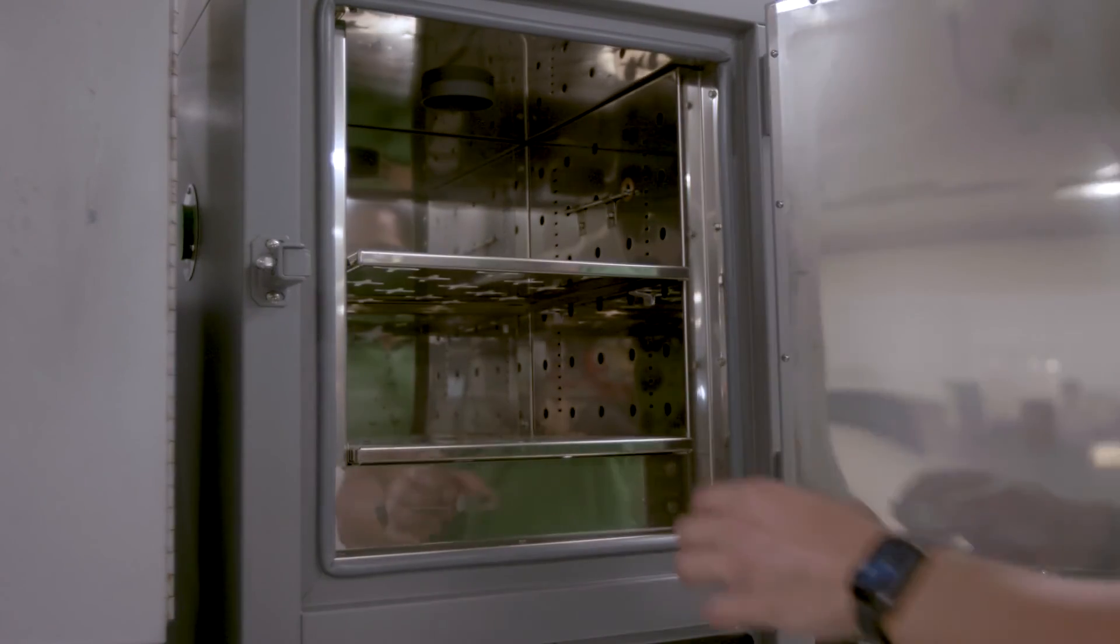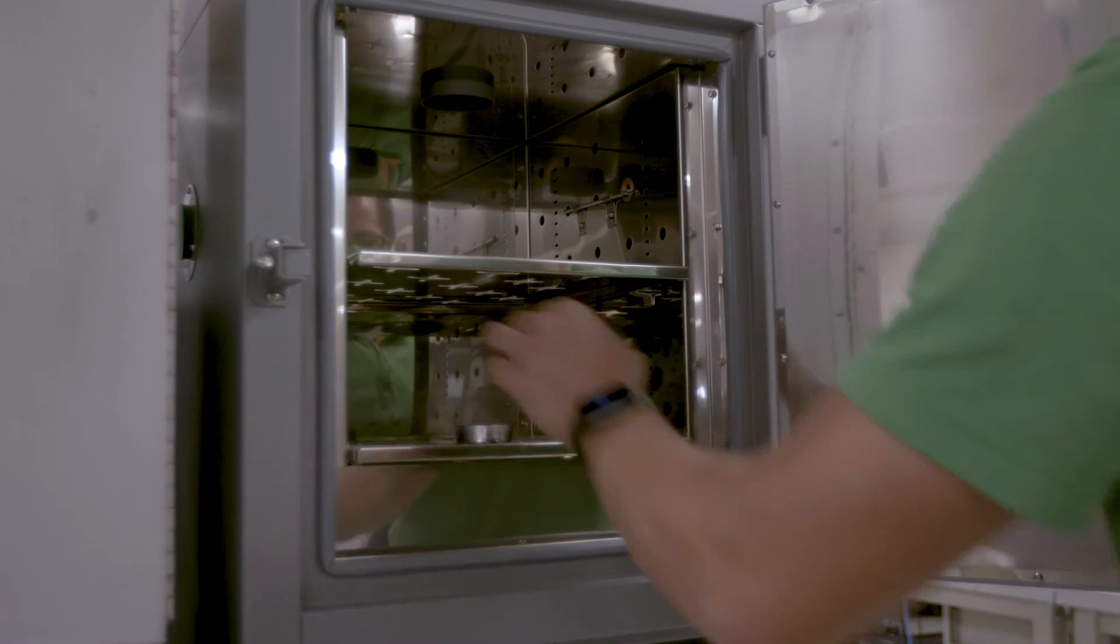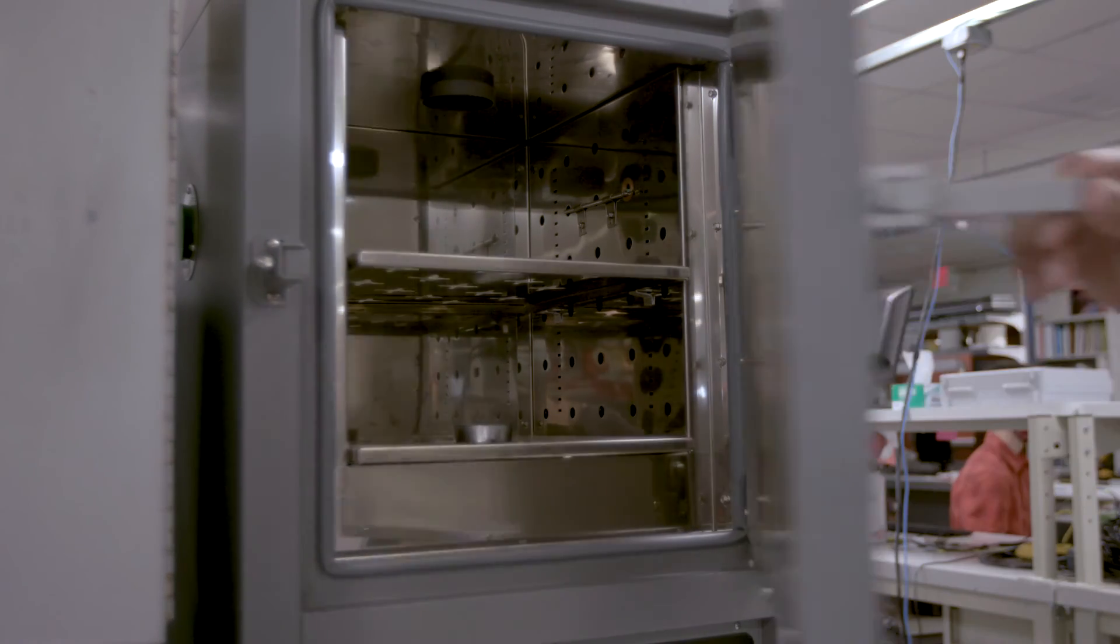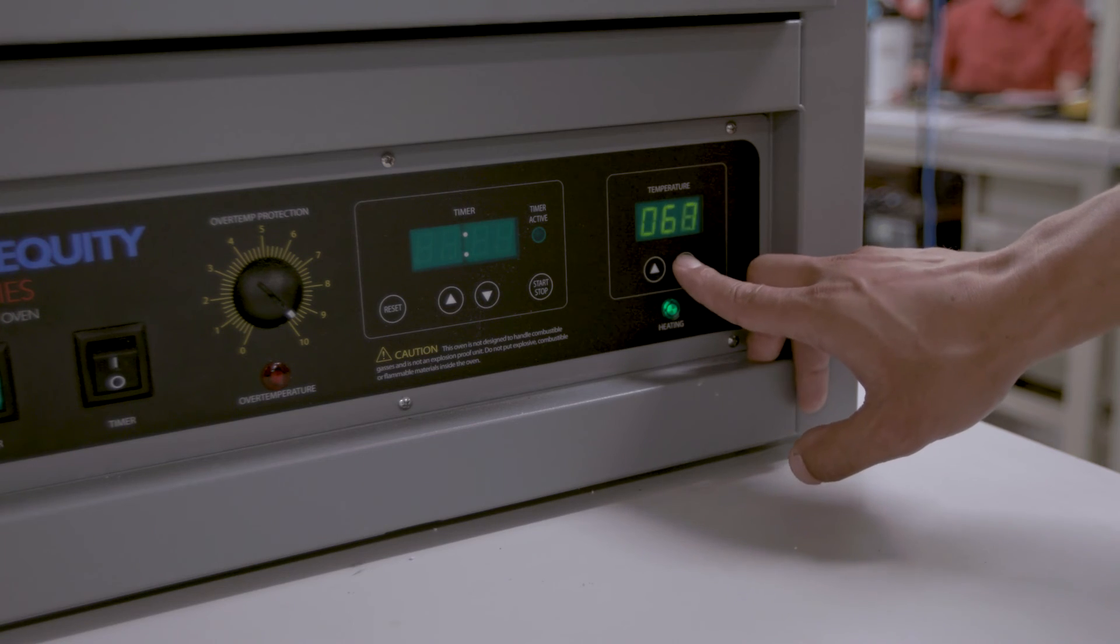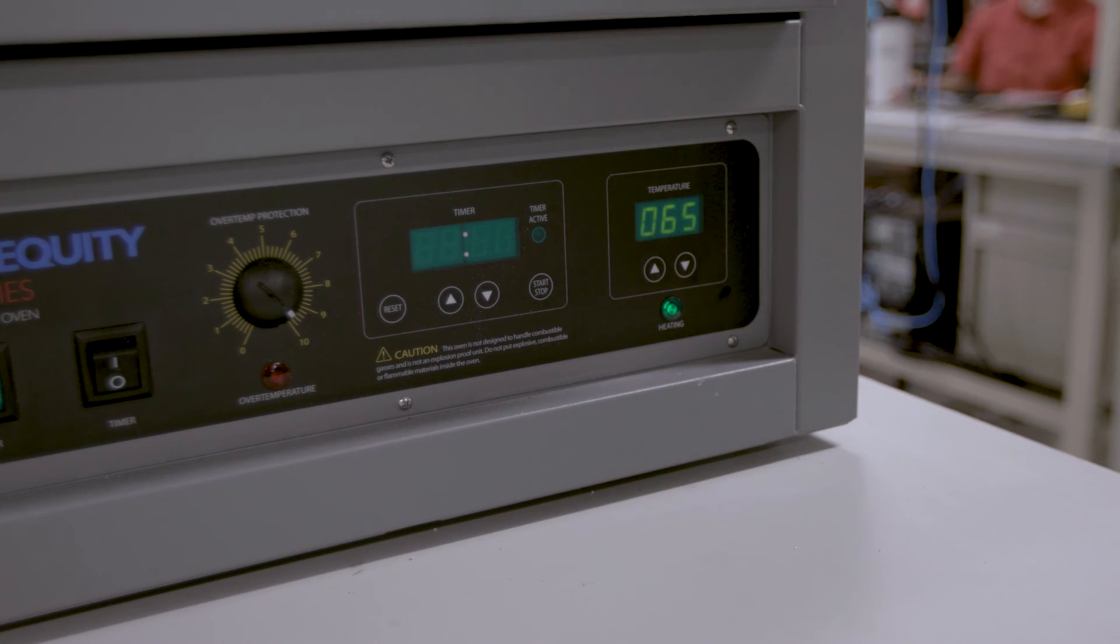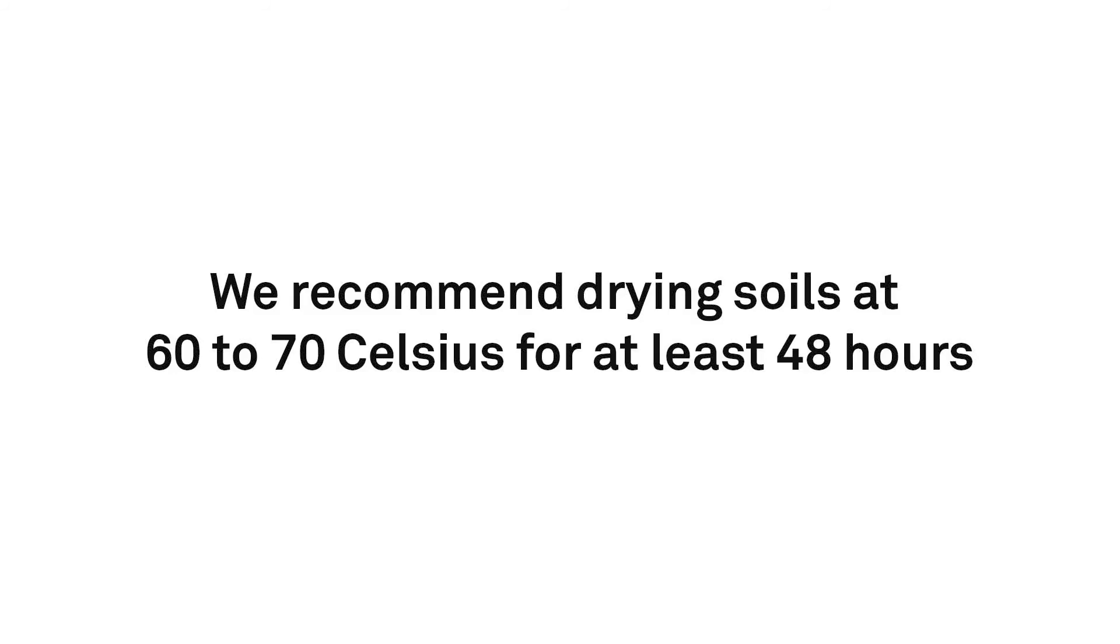To dry the initial volumetric soil sample, place all of the already weighed sample into the 105 degrees Celsius oven for 24 hours. Note that soils with high organic matter content may lose significant volatile organics if dried at 105 degrees Celsius, leading to error in the calibration. We recommend drying these soils at 60 to 70 degrees Celsius for at least 48 hours.